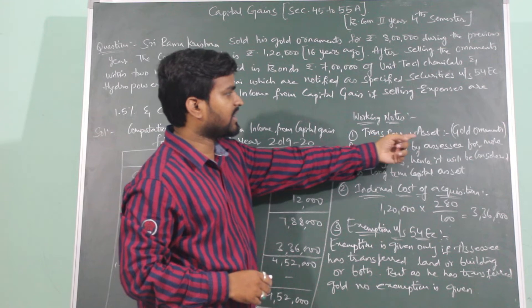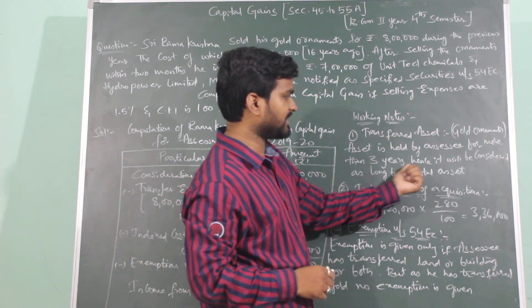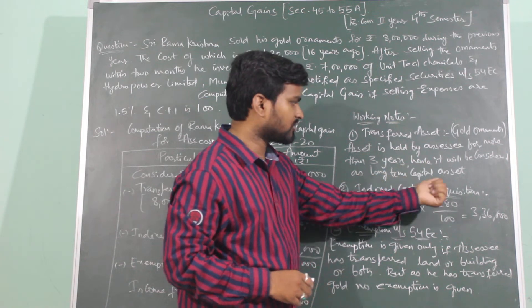Here is the working notes. Transferred asset gold ornaments. Asset is held by the assessee for more than 3 years. Hence, it will be considered as long term capital asset.